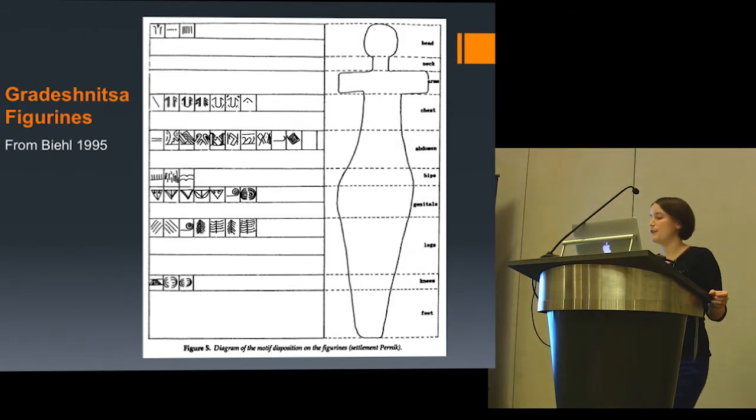In 1995, Peter Beal used an attribute analysis approach in his study of Gradeshnitsa figurines in order to determine whether designs were chosen based on their location on the body of a figure. It was his interest in combining an analysis of the location of attributes with description of the attributes that informed much of the creation of my database. What characterizes all these previous studies, as well as my own, is the large amount of data. Those of us who deal with big data are drawn to methods that naturally involve the mathematical approaches that necessitate computing power.